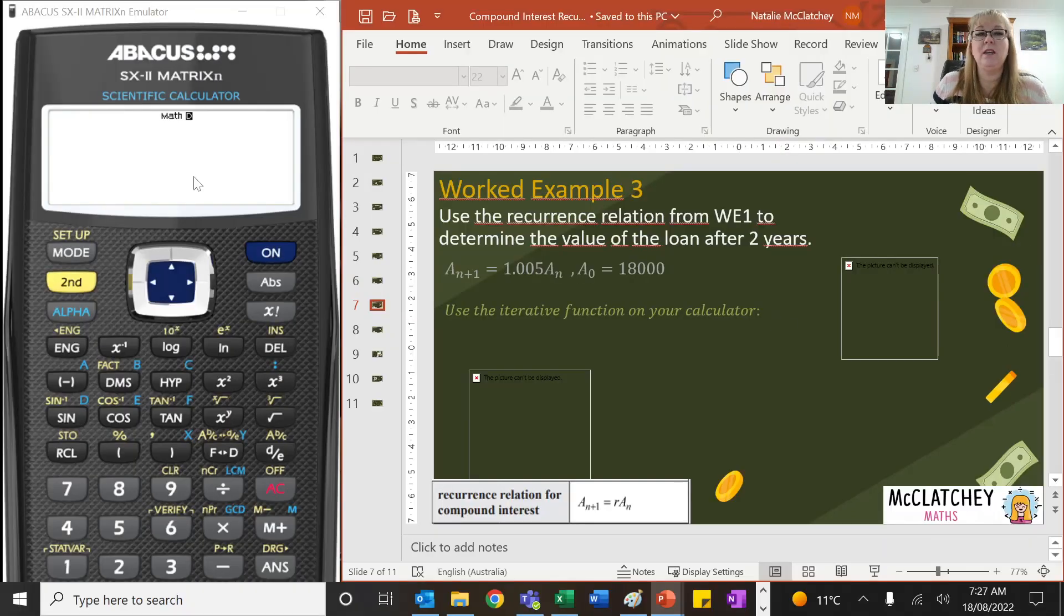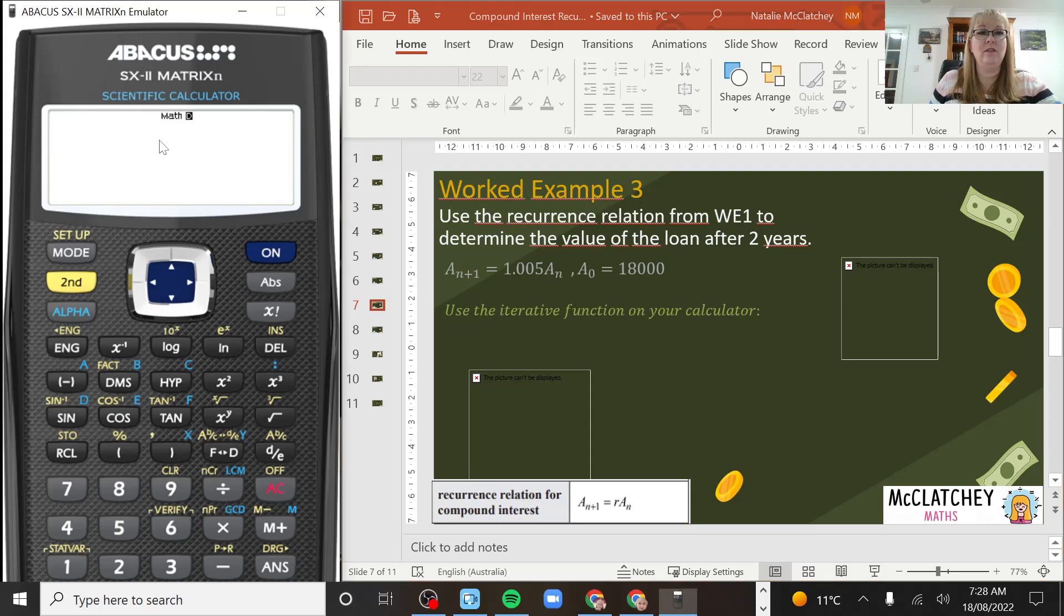Okay so I've got something here called an Abacus calculator. You normally see me with the Casio but I'm trialing a new calculator at the moment. I do believe it has actually been put together by Casio and it's called an Abacus calculator. So what we're going to do here is we're going to start with our $18,000. We're going to put that into our calculator and then we're going to press the equals button and that will drop it to the bottom of the screen. We always do this when we're using the iterative function. Now what we're going to do now is multiply that by 1.005 because that's what's happening here, 1.005, and then what we're going to do is we're going to press our equals button 24 times.